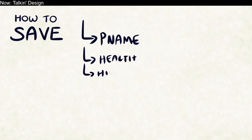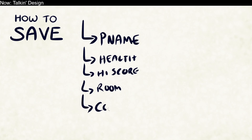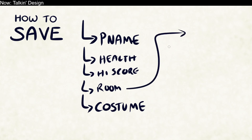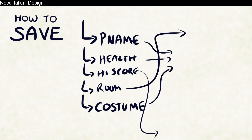Maybe you save their high score in some mini-game. Maybe you store what room they're in so that when they hit continue on the main menu, it loads the correct level. Maybe you save their costume, because if they customize their appearance, they're going to want that to survive saving and loading. These are all variables attached to the struct, and when we load the game, we know when we need each of them.